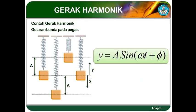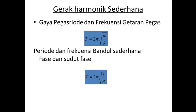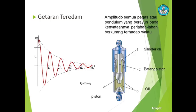Beberapa posisi dalam gerak harmonik sederhana pada pegas menggunakan persamaan yang sama. Pada pegas, gaya pegas, periode dan frekuensinya dirumuskan T = 2π akar dari m per k, yaitu periode sama dengan 2π akar massa per konstanta pegas. Sedangkan dalam ayunan sederhana, periode dan frekuensinya dirumuskan T = 2π akar dari L per g, yaitu akar panjang per gravitasi.